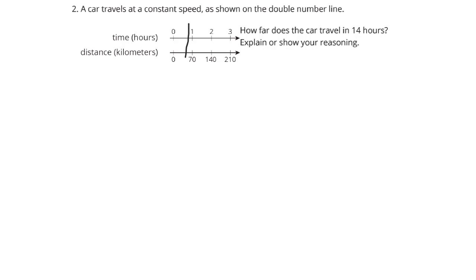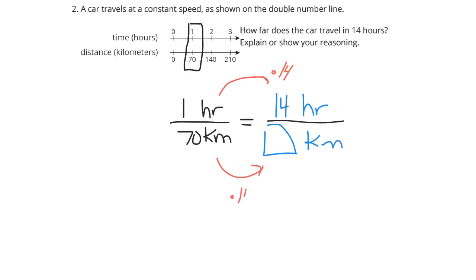Well, if it's traveling 70 kilometers in one hour, we can take a look and see, well what about those 14 hours? How many kilometers is that going to be? Well, 1 multiplied by 14 is 14. And if I take 70 and multiply it by 14, we end up with 980 kilometers. 70 times 14 is 980 kilometers in those 14 hours.